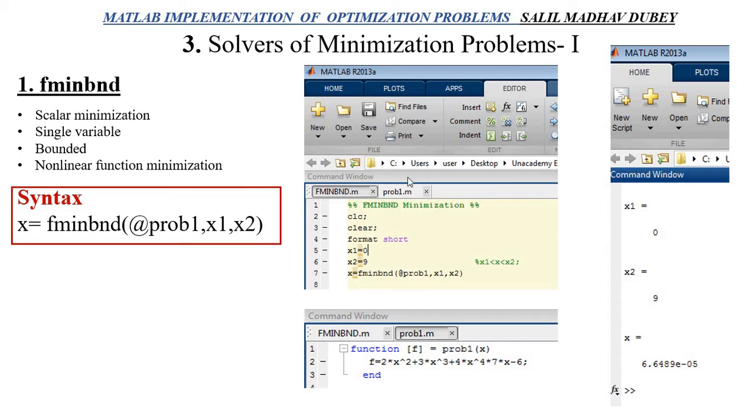As you can see in the snapshots, I have first clc, clear, then format short, then x1 is 0 and x2 is 9. x1 is the lower limit and x2 is the upper limit. So we have to take care that x1 is lower than x2.